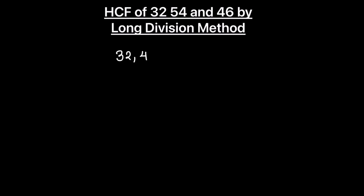We need to find such a number. In the first step of the long division method, we divide the biggest number by the smallest number. Our three numbers are 32, 46, and 54, and the biggest number is 54, so we will divide 54 by the smallest number, which is 32.